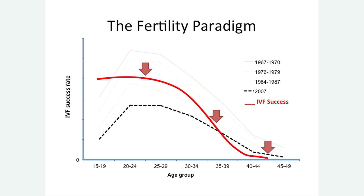Why does this happen? Well, you need to understand a little bit about female biology. Unlike women, men are the ultimate multi-taskers. While I'm standing here, I'm producing 200 sperm every single second. Women, on the other hand, only produce eggs once in their lifetime.